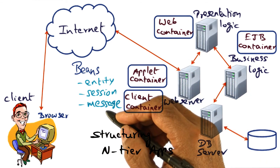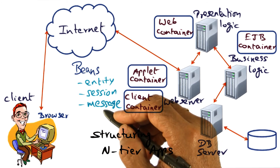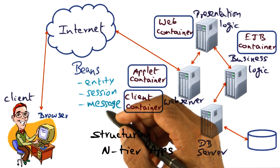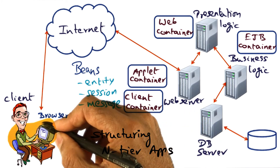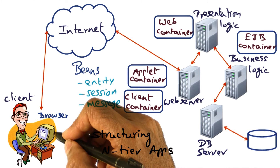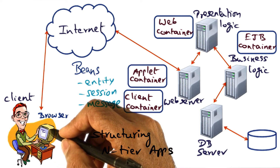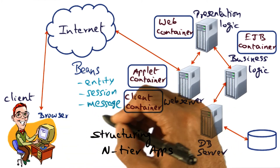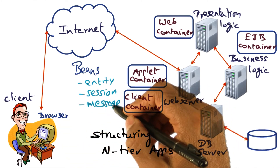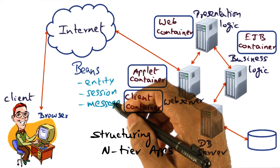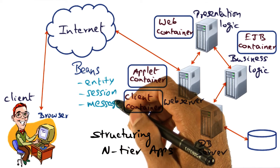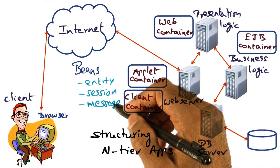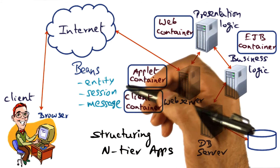The third type of bean is called a message-driven bean, which is useful for asynchronous behavior. For instance, I might have a stock quote ticker on my browser and want to get updates on stock movements for a company I'm interested in — that would be accomplished using a message-driven bean. Stock tickers and news feeds are examples. RSS feeds that are commonly used today are also examples of message-driven beans.